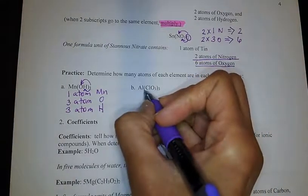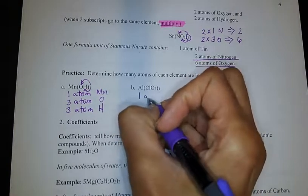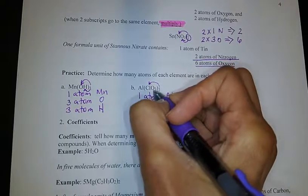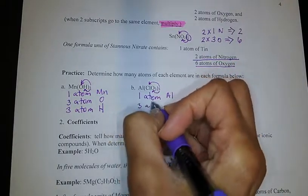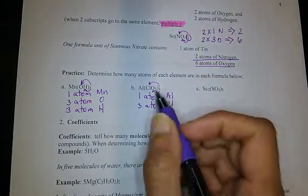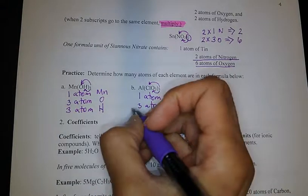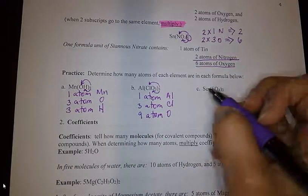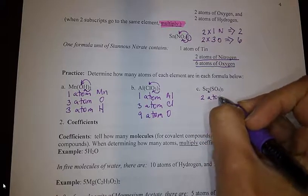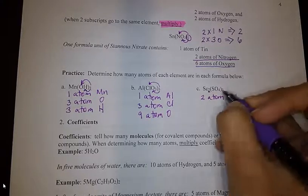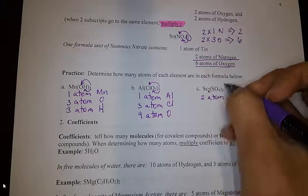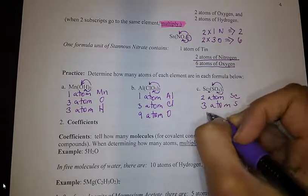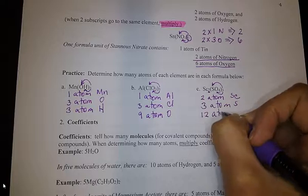For the next one, Al(ClO3)3: aluminum has no subscript, so one atom of Al. The three outside distributes inside the parentheses — there are three atoms of chlorine, and three times three gives nine atoms of oxygen. For the last one, Sc2(SO4)3: there are two atoms of scandium. The three distributes inside: one sulfur times three gives three atoms of sulfur, and four times three gives twelve atoms of oxygen.